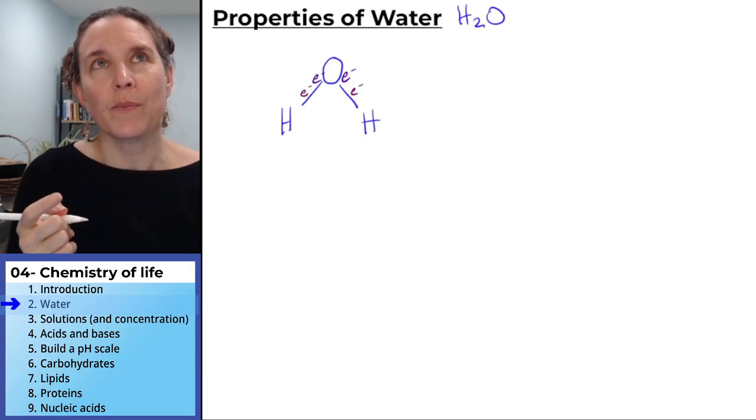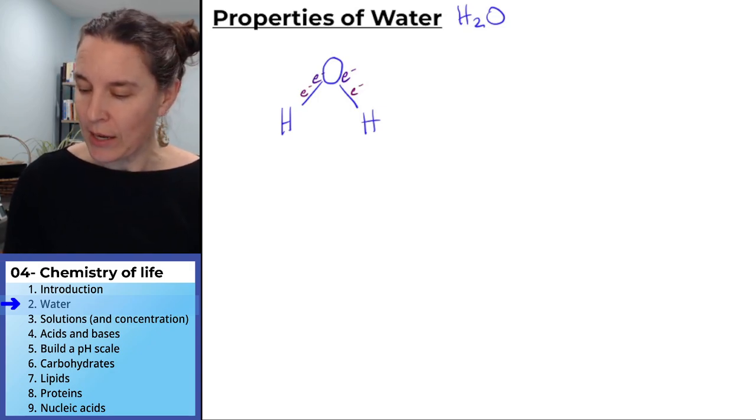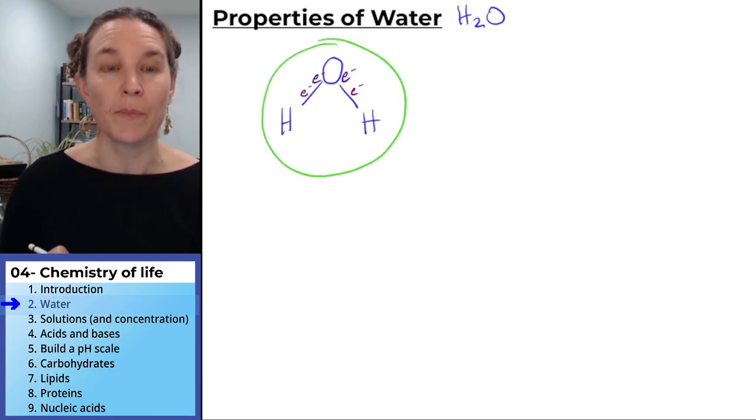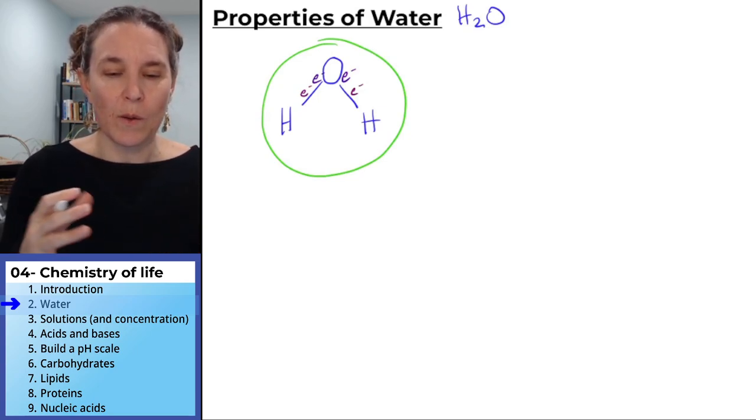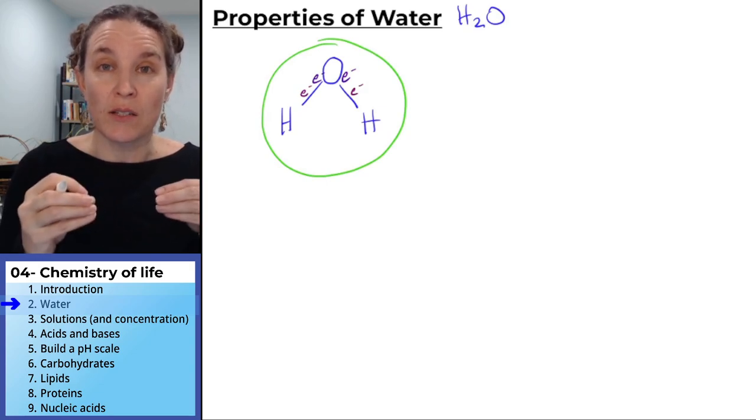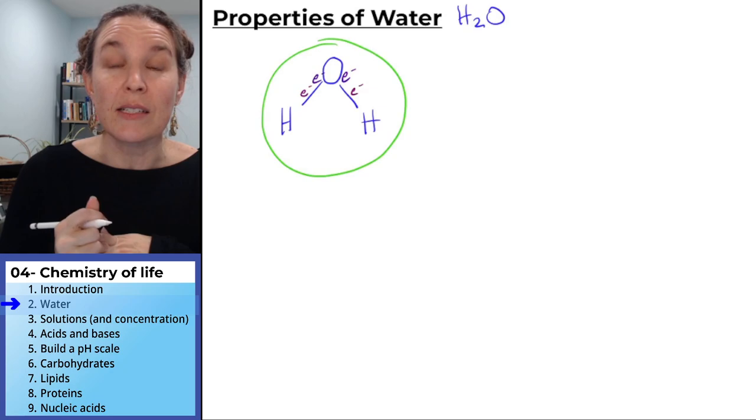One of the most important qualities of water is that it's called a polar molecule. I'm going to draw a circle around the entire water molecule. The chemical bond between the hydrogen and the oxygen, because they're sharing those electrons, that's a covalent bond.